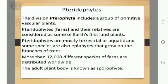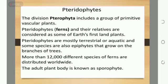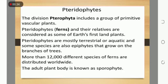Pteridophytes are vascular plants that reproduce and disperse via spores. Because they produce neither flowers nor seeds, they are referred to as cryptogams. The division of Pteridophyta includes a group of primitive vascular plants. Pteridophytes and their relatives are considered some of Earth's first land plants.